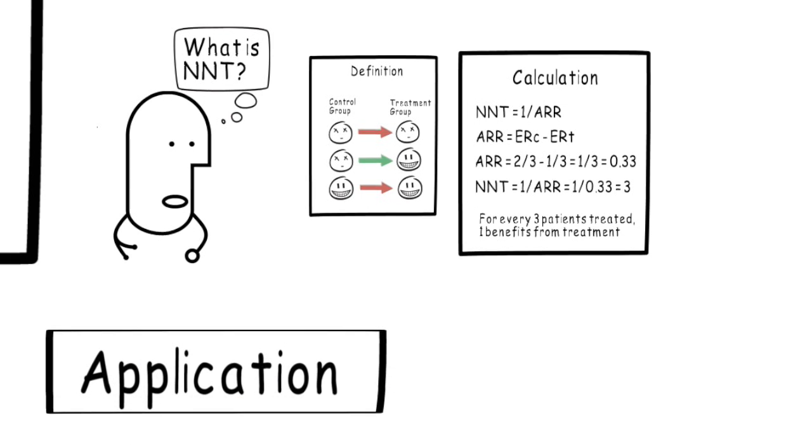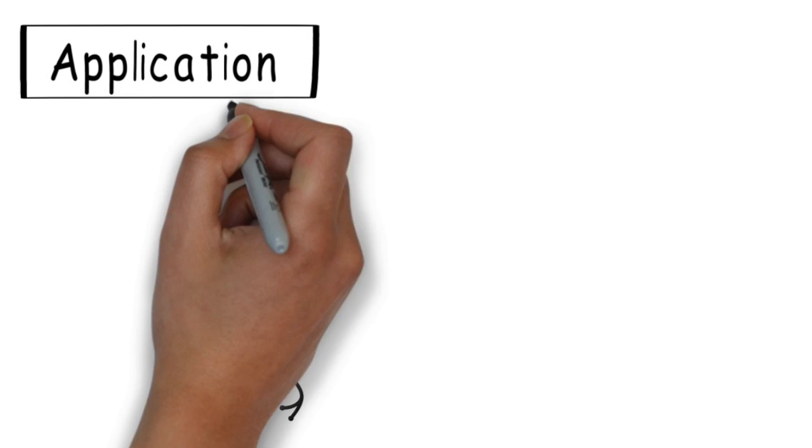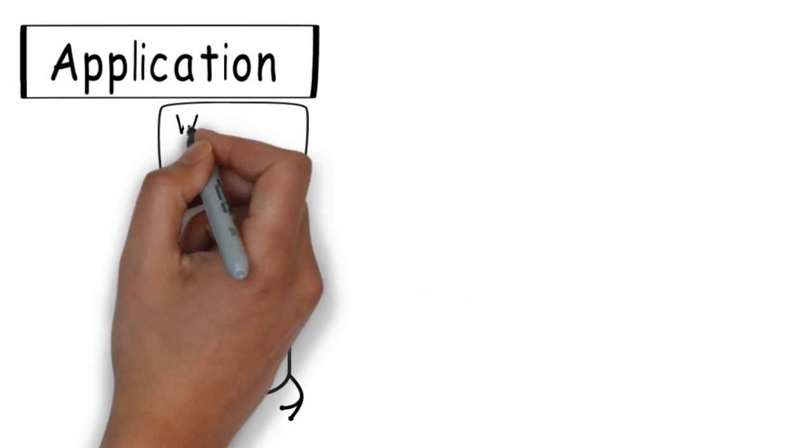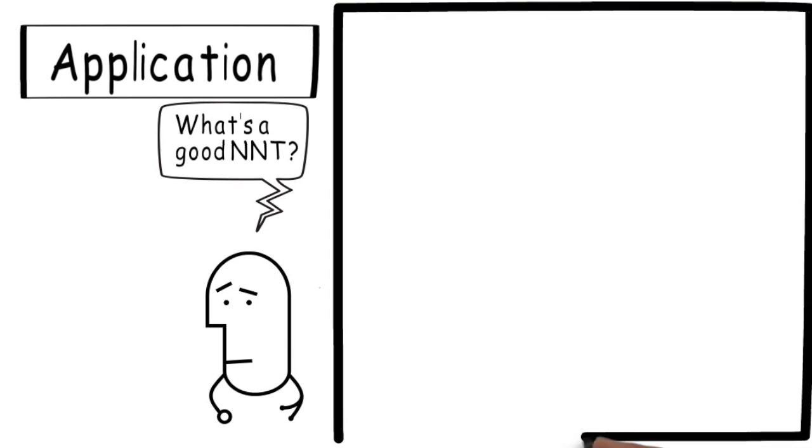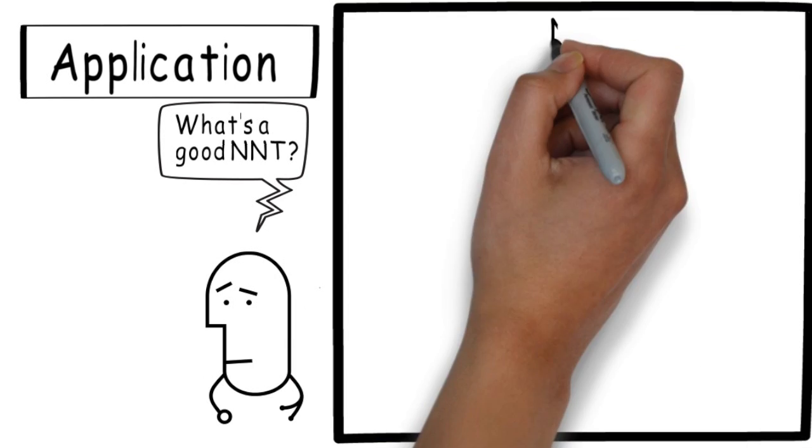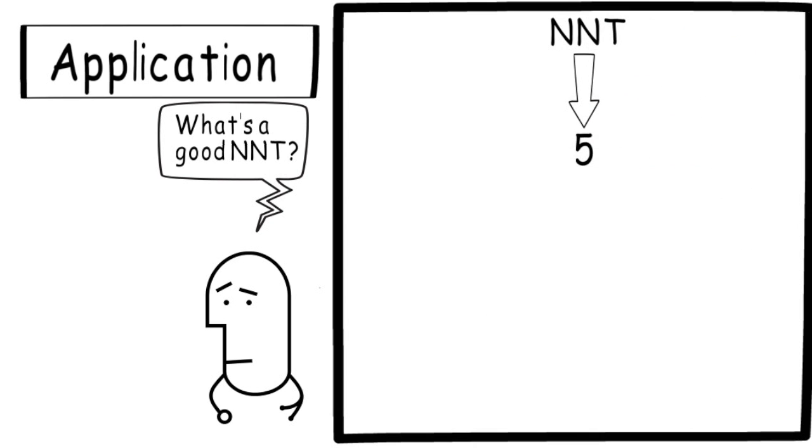One of the questions that often comes up is what is a good NNT? For the most part, lower NNTs are better than higher NNTs, but that doesn't tell the whole story. And I think the best way for us to understand this is to use three different examples. Let's look at an NNT of 5, an NNT of 50, and an NNT of 50,000. Just looking at these numbers, you might say 5 is better than 50,000. You only have to treat five patients. Great!